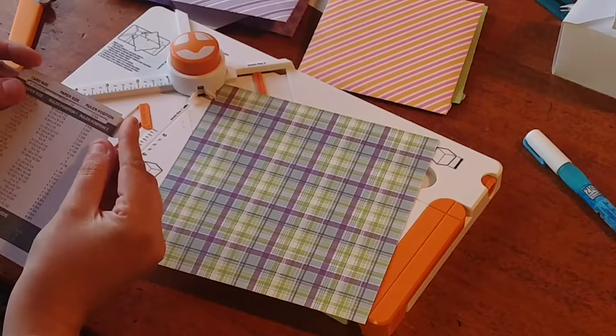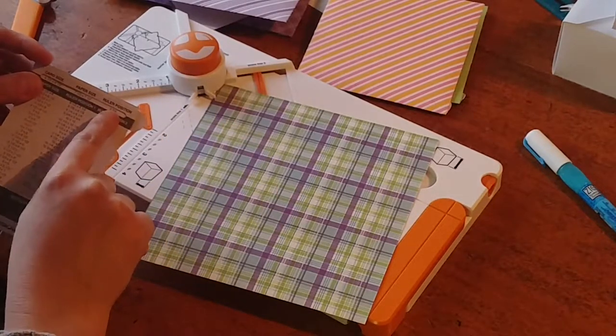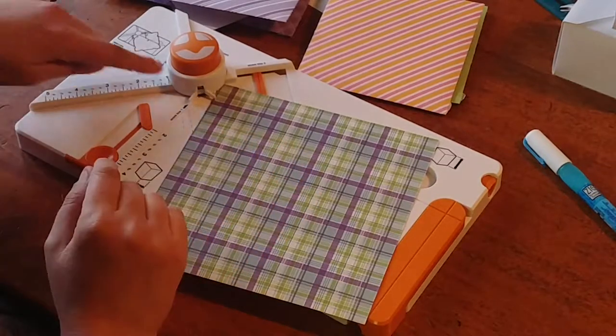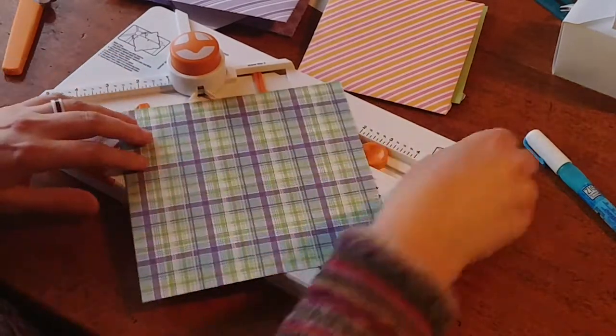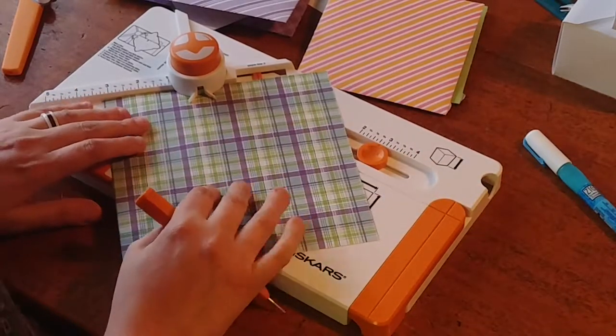And so, I'm going to get started. So, it tells me that for my 7 1⁄2 inch paper, my ruler position is going to be 3 3⁄4. So, I'm going to come across here, I'm going to pull out my stylus. So, 3 3⁄4.